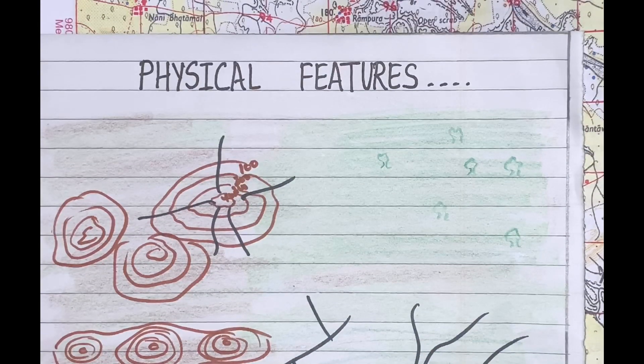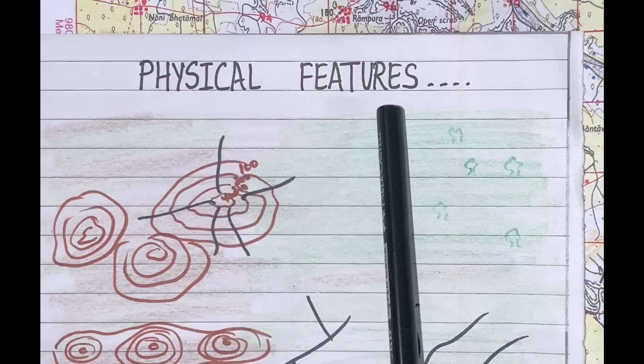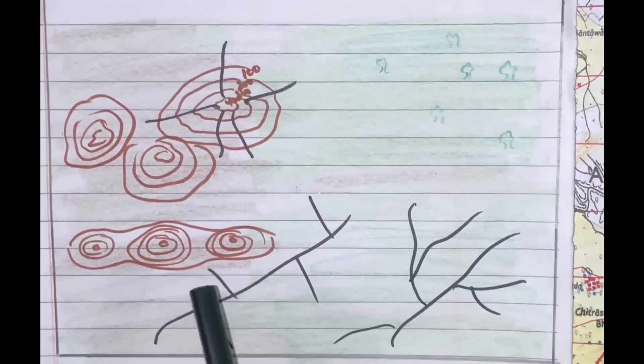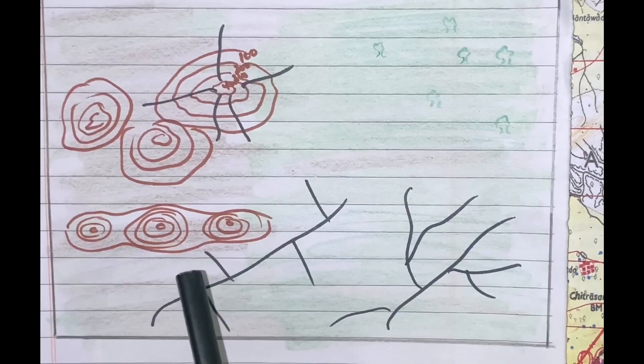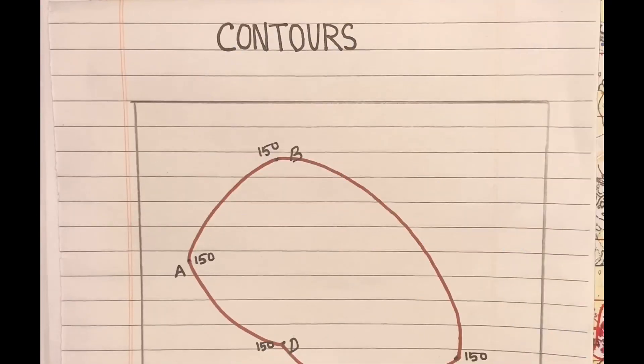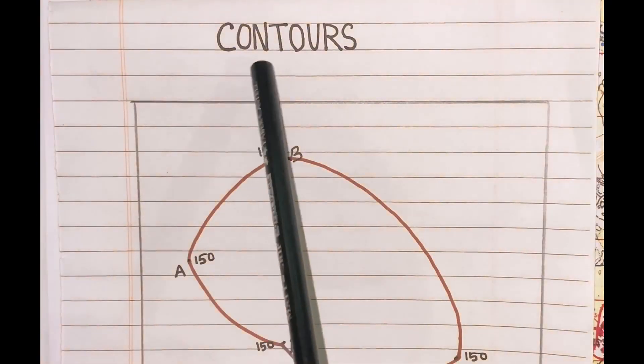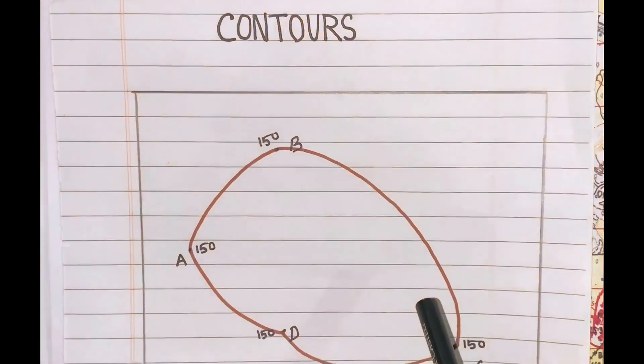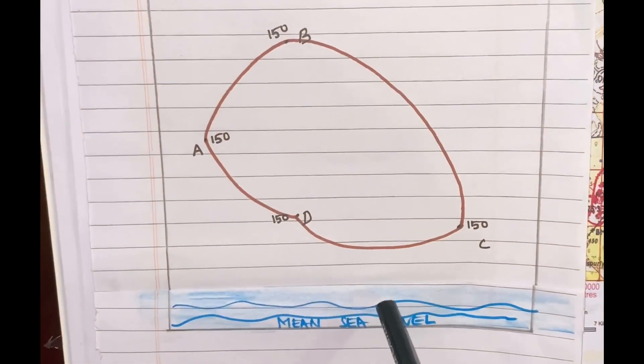Whereas the three-dimensional physical features such as relief, vegetation and the different patterns of drainage are represented by means of contours. Now the question comes, what are contours?